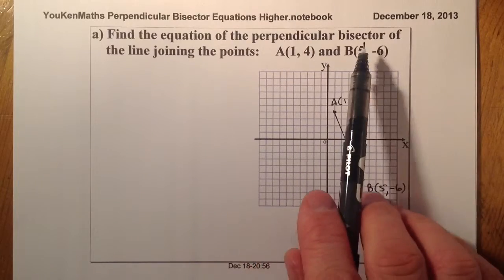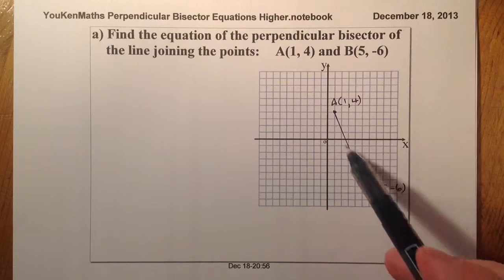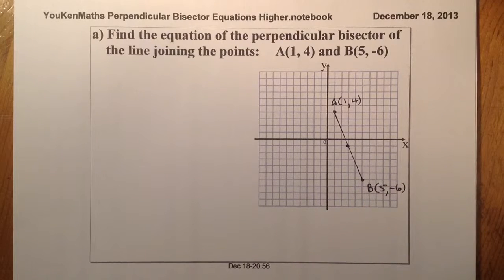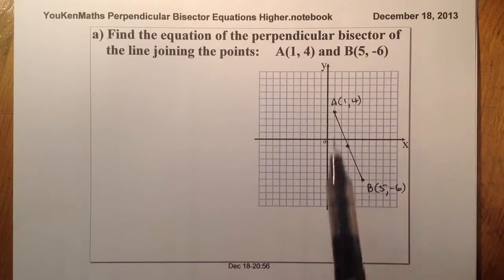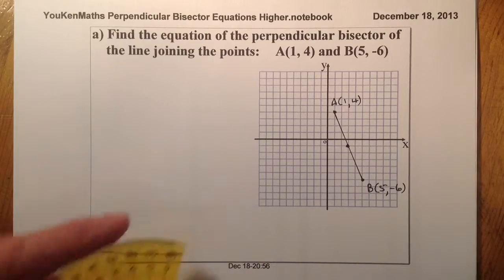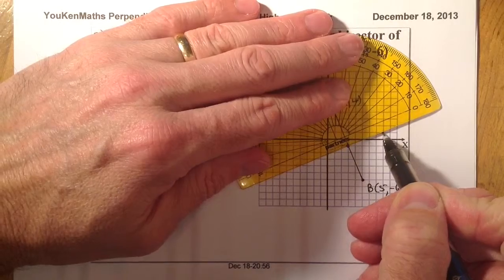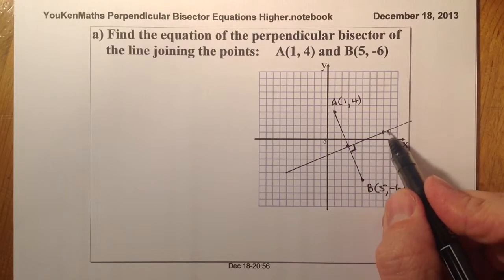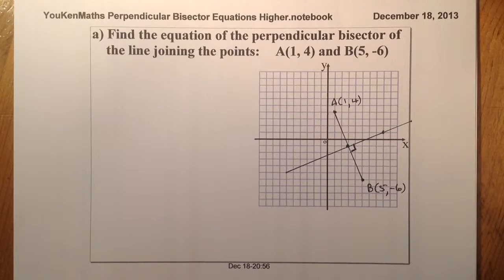Now the word 'perpendicular bisector' — 'bisect' would cut this line in half, so if I cut that line in half, I would find the midpoint probably about there. And then 'perpendicular' means a line running at right angles to this one, so I would expect it to be somewhere close to being at right angles to that line.